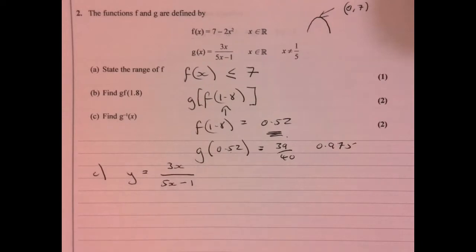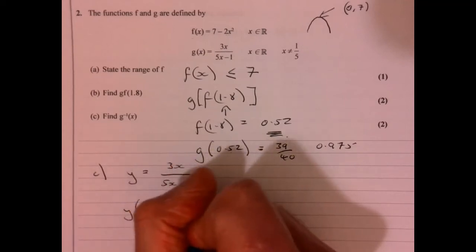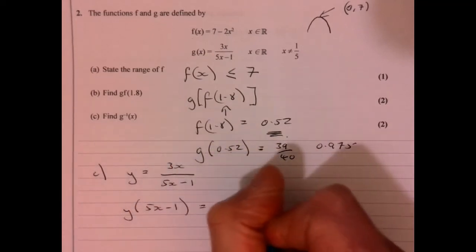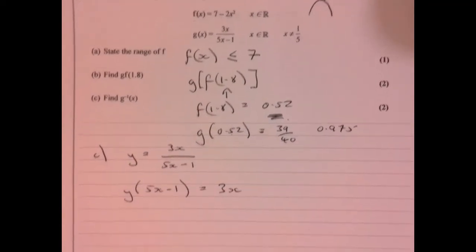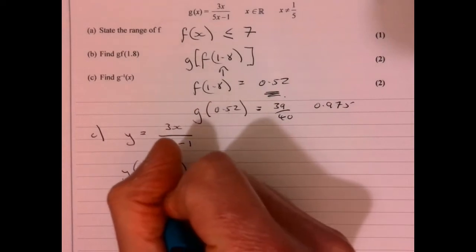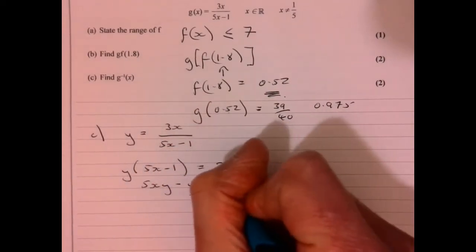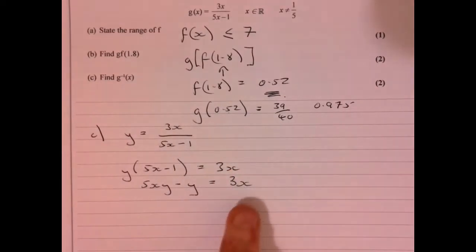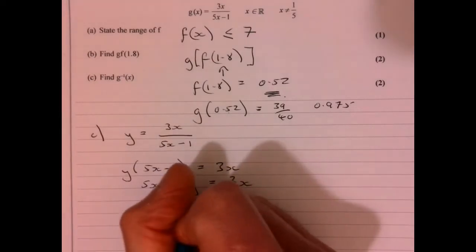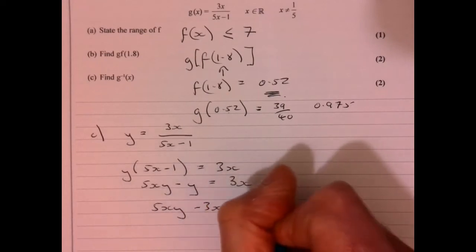What we want to get to is x equals. So let's multiply both sides by 5x minus 1. So 5x minus 1 times y equals 3x. I'm just going to move that up a little bit. Then we're going to multiply this out, which gives us 5xy minus y equals 3x. We take away 3x from both sides because I'm trying to get all the x's together.